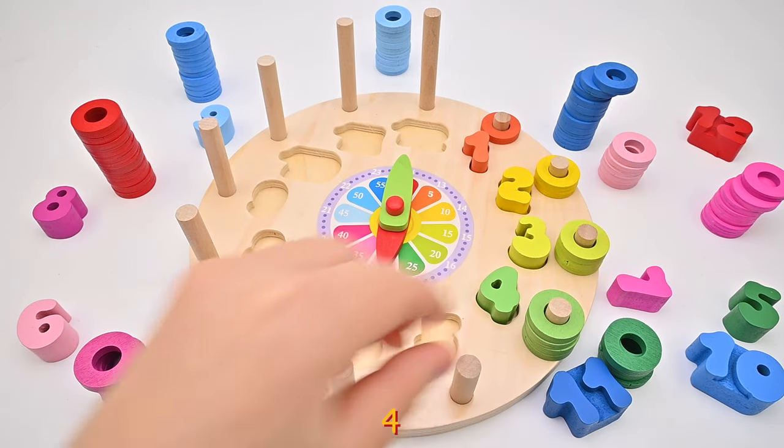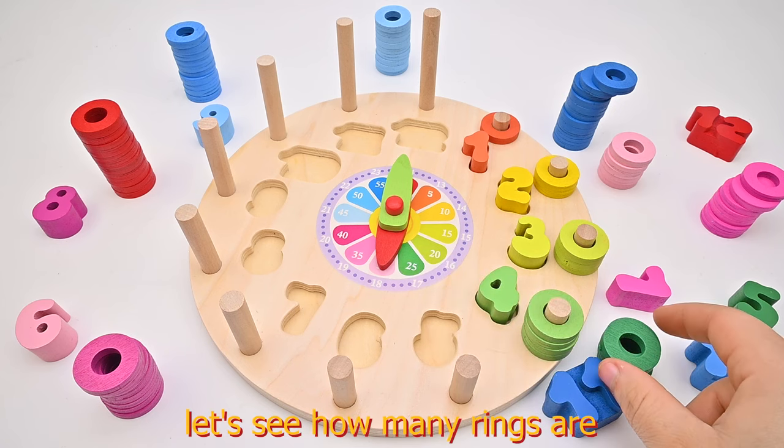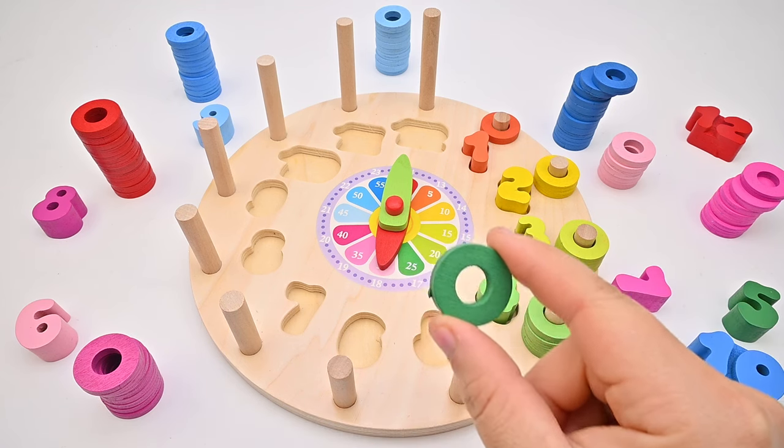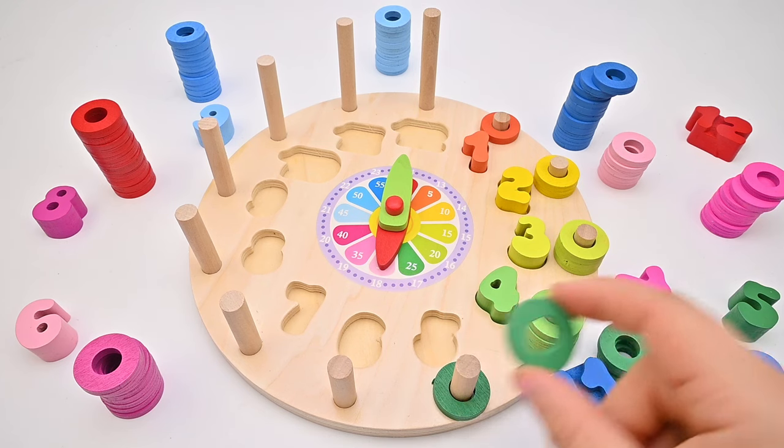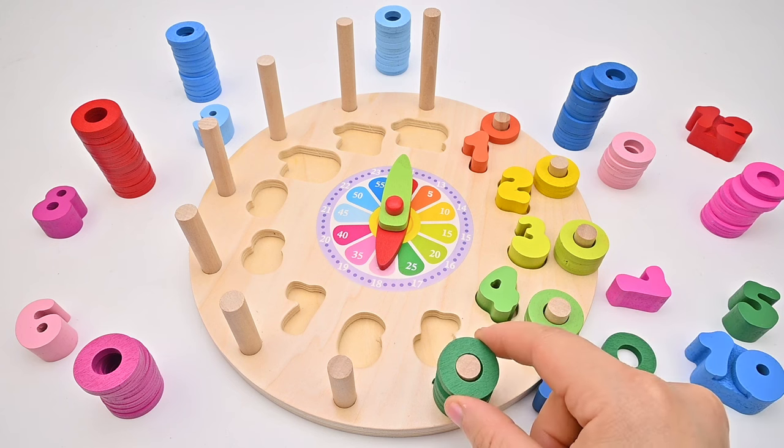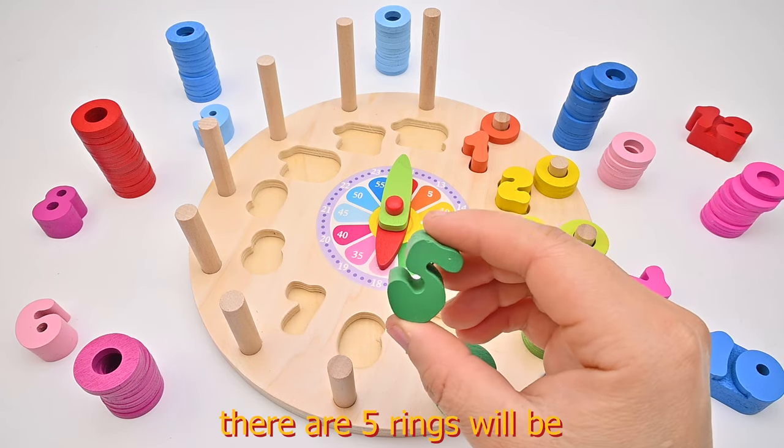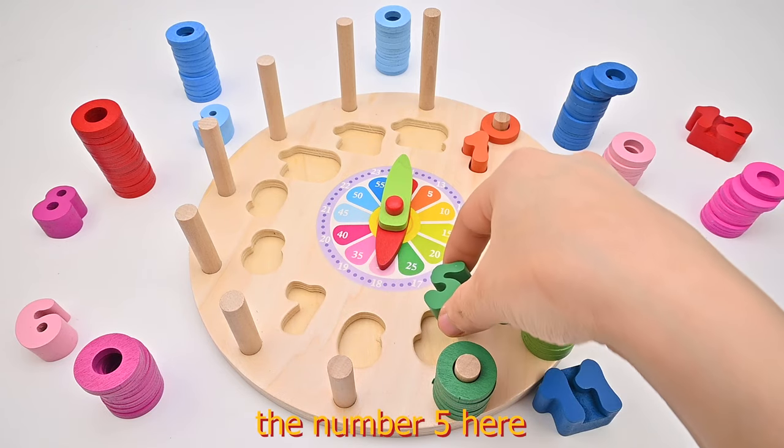This is the number 25. Let's see how many rings are in the corresponding column. 1, 2, 3, 4, 5. There are 5 rings, which will be the number 5 here.